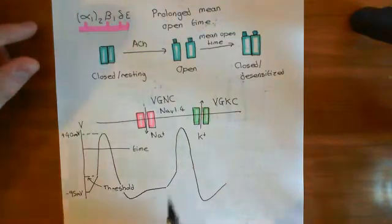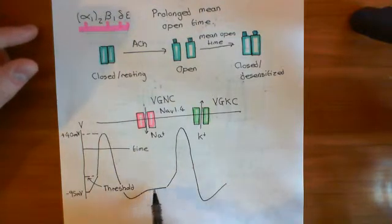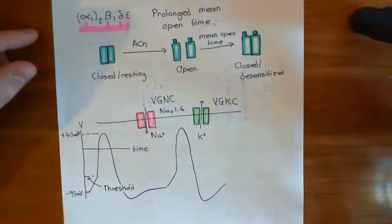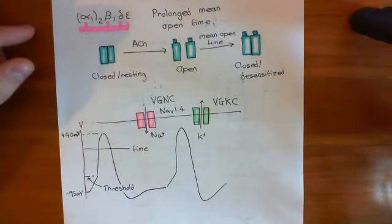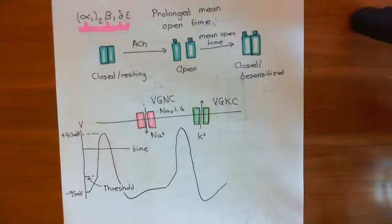You only get one action potential because by the time you get back here, they're in the closed, desensitized state. So they're not capable of depolarizing the membrane again. So in the slow channel syndrome, what you get is these multiple action potentials propagating along your sarcolemma due to just one stimulation by the alpha motor neuron.